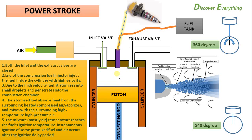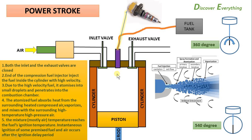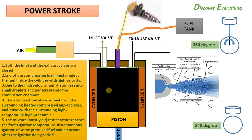The combustion pushes the piston down. The piston, via the connecting rod, rotates the crankshaft. The crankshaft completes another 180 degrees of rotation, making the total rotation 540 degrees — one and a half full rotations — completing the power stroke.